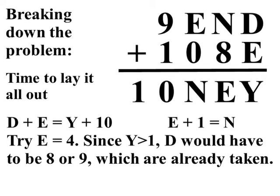How about E equals 4? Well, using the same logic, that would mean D would have to be 8 or 9, and since both 8 and 9 are taken, E cannot be 4.